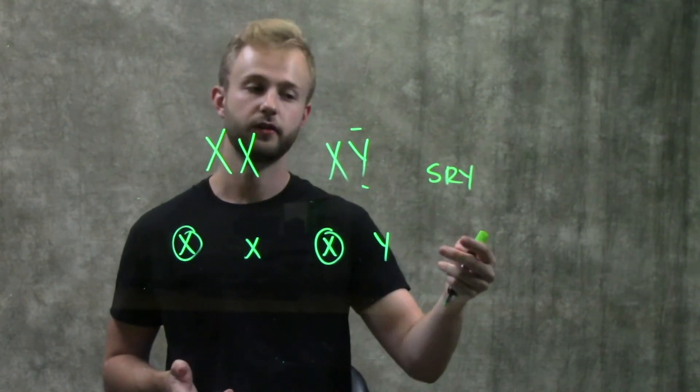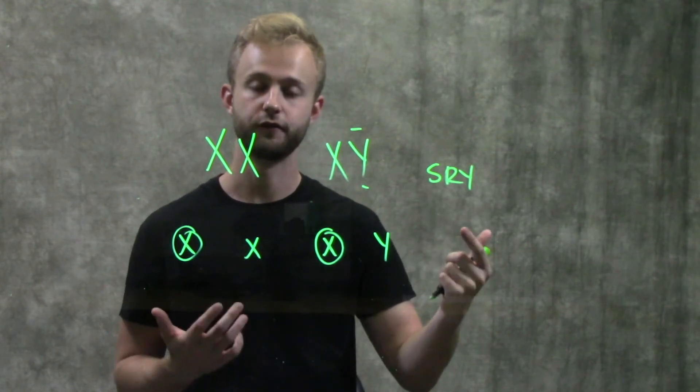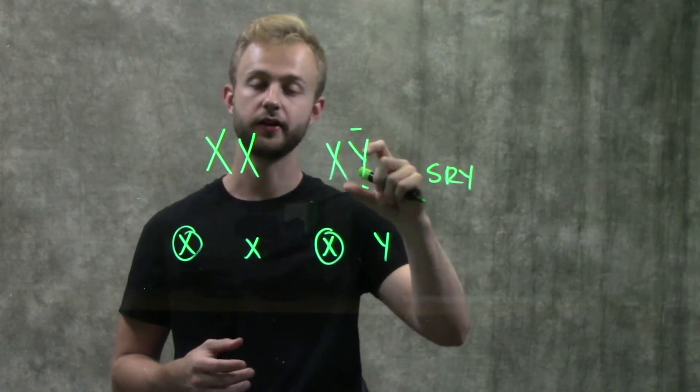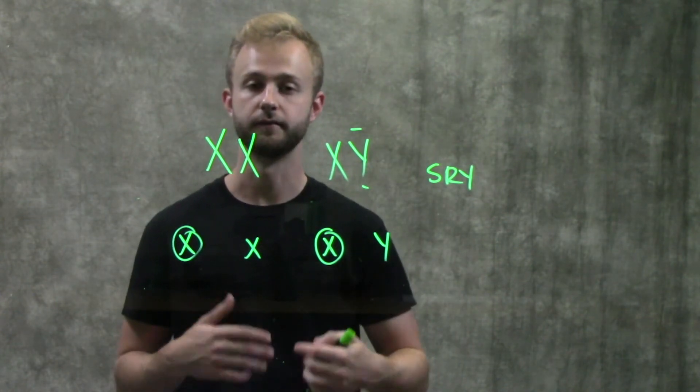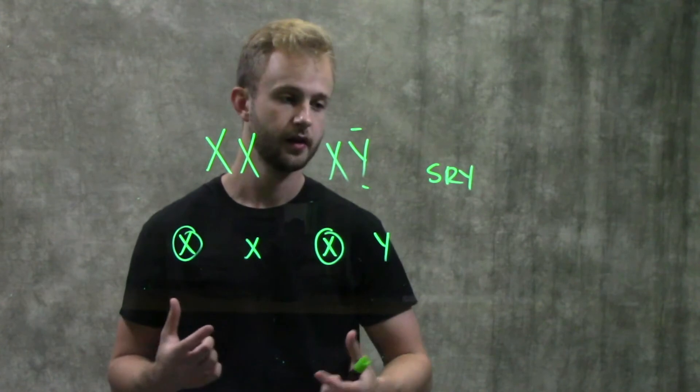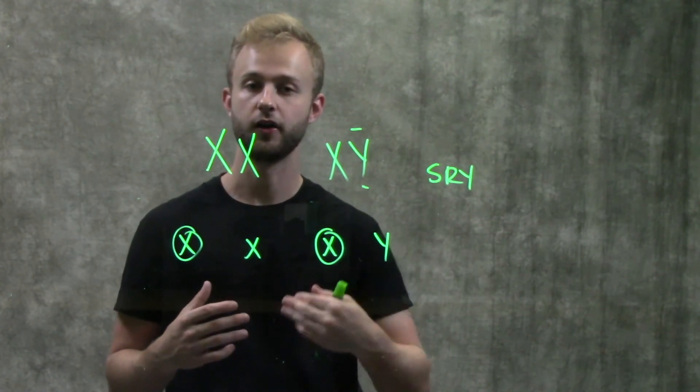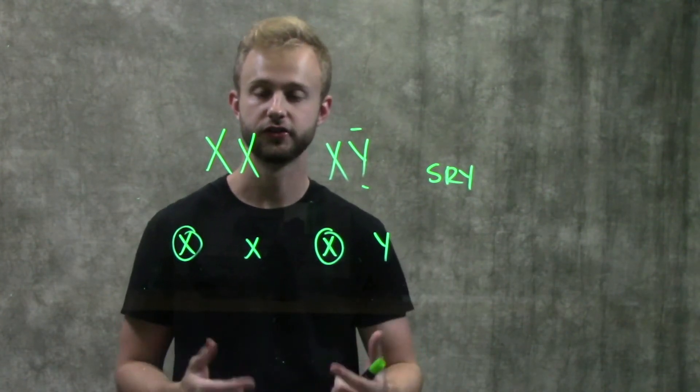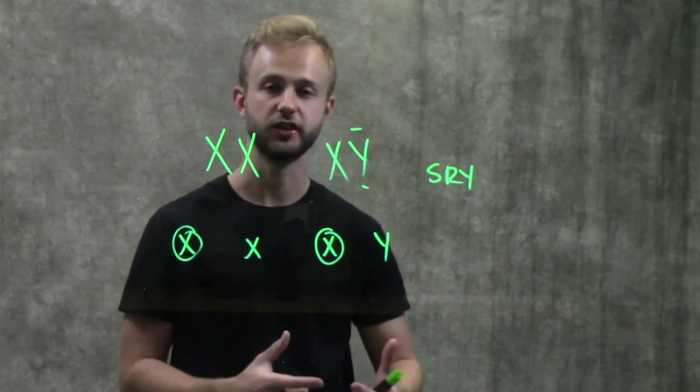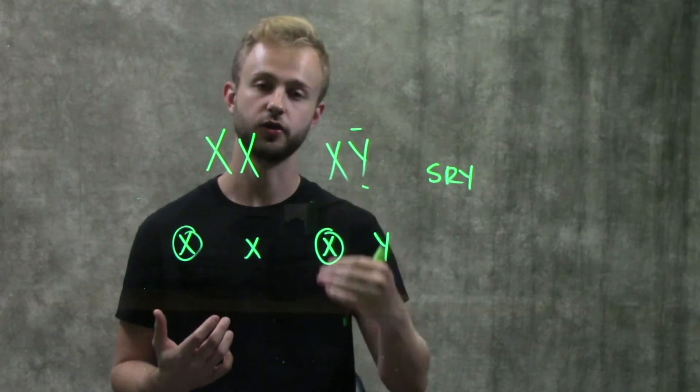The SRY gene stands for the sex-determining region of Y. So it's a portion of the Y chromosome that's really important in the development of male sexual characteristics. This gene is on the Y chromosome, so it can only be inherited if you inherit a Y chromosome, and it will only be present in males. So that's an example of a sex-linked gene - any gene that's located on one of these sex chromosomes.